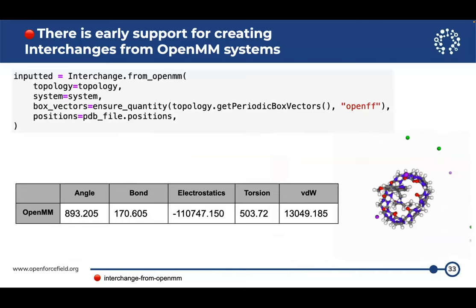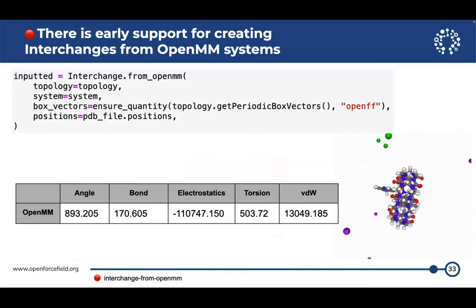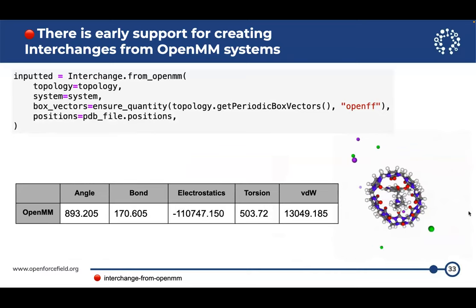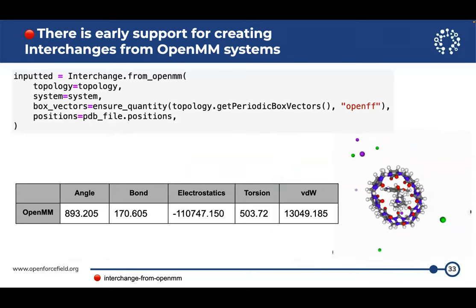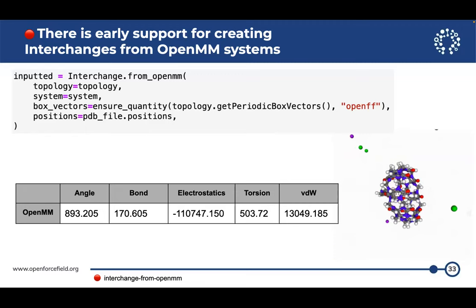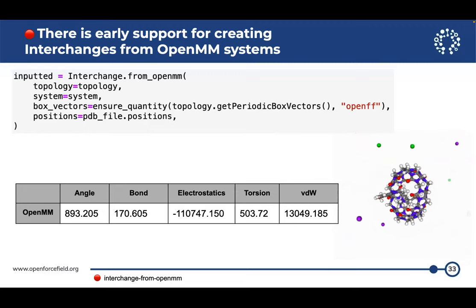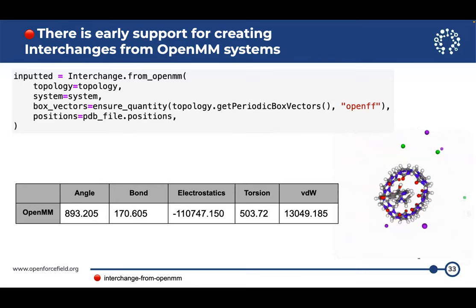There's early prototype support — red light — for creating interchanges from already-existing OpenMM systems. You can get OpenMM systems from a variety of places, like the OpenMM force fields package can make you a CHARMM lipid, and you could load that into an interchange for combination with other components. Force fields are hugely detailed and not all things are compatible, so there's going to be some rough going and a lot of user experience improvement needed in this area.